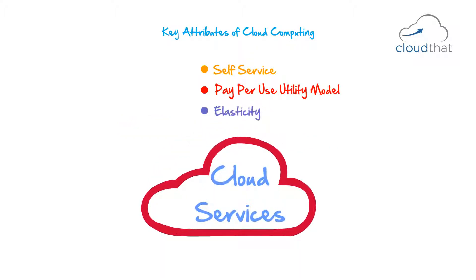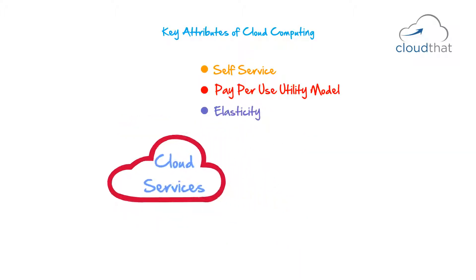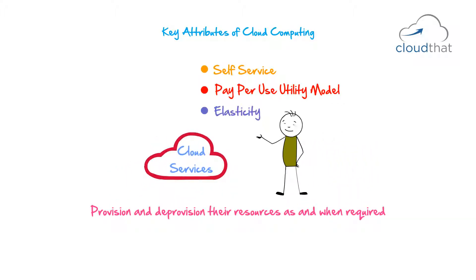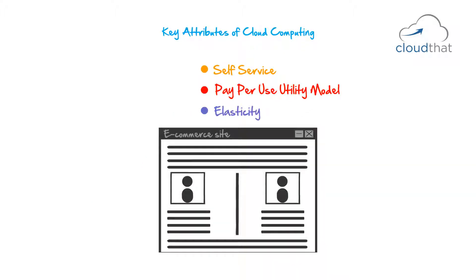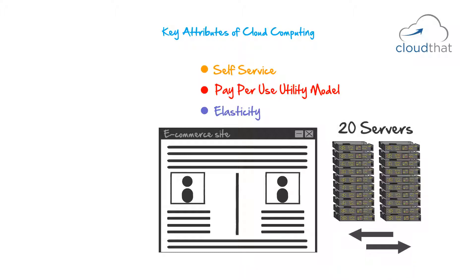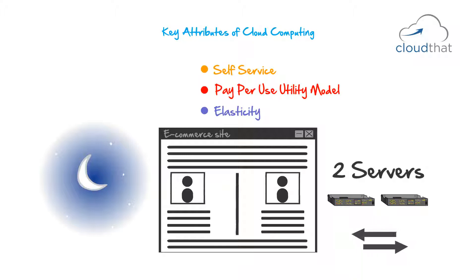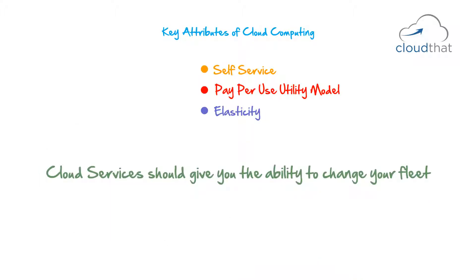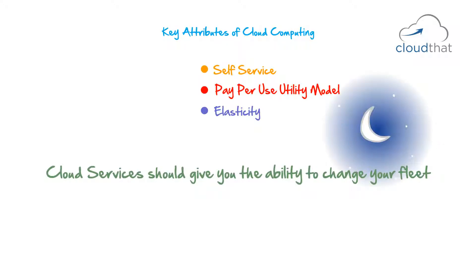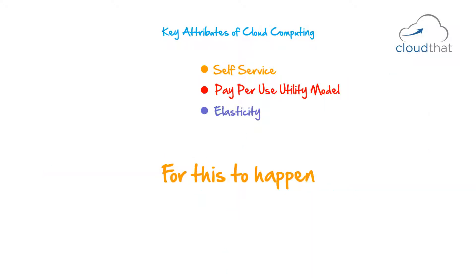Cloud services should be elastic. Cloud services must allow users to quickly provision and deprovision their resources as and when required. For example, an e-commerce site may need about 20 servers to support traffic during peak hours, but at night with less traffic, need only two servers running. Cloud services should give you the ability to change your fleet from 20 to 2 servers at night and back to 20 during the day.